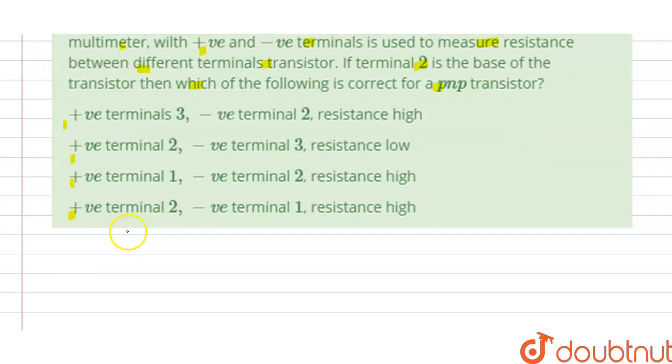The solution of this question is firstly we draw the PNP transistor here. So this is our P, this is our N, and this is our P. So we can write here this is P, this is N, and this is P.